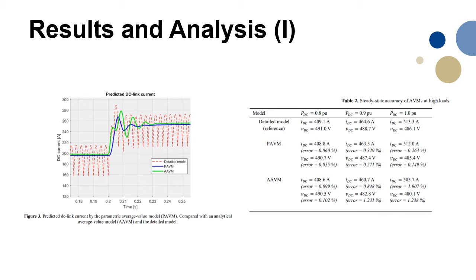The parametric average value model is more accurate than the analytical model, which you can see in the figure on the left, except for predicting the DC link voltage during load steps. This is believed to stem from the implementation of the parametric model in Simulink, where a too-low dynamic impedance loading set is calculated in the first time step. The improvement of the accuracy of the parametric model for this variable is something that could be improved in the successive master thesis.